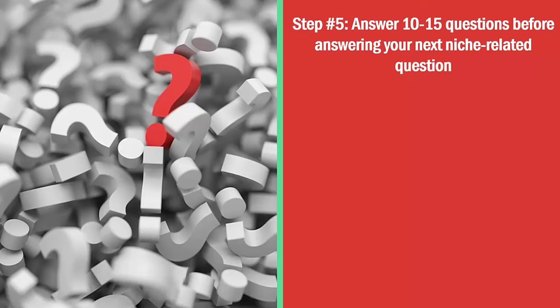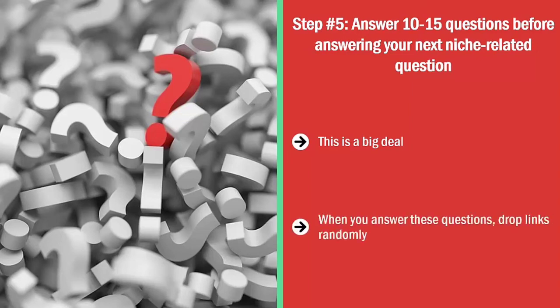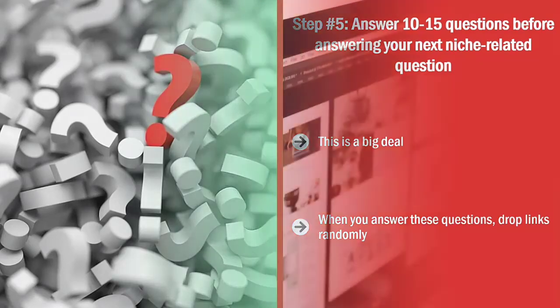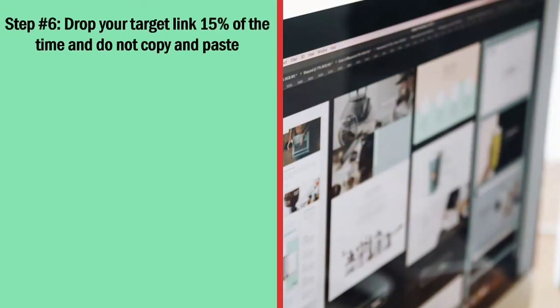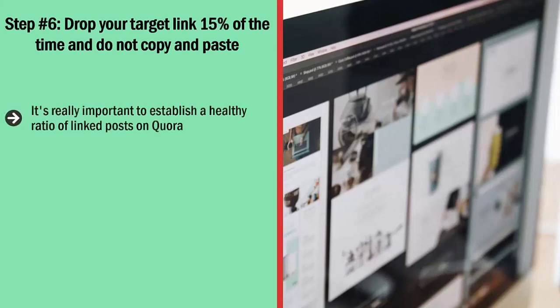Step number five: answer 10 to 15 questions before answering your next niche-related question. You can't only answer questions related to your niche — that's too obvious. Answer 10 to 15 unrelated questions across a wide range of unrelated niches. When you answer these, drop links randomly to curated content that answers their questions and is genuinely helpful — links unrelated to your niche. By doing this you build authority and begin to look like a legitimate, bonafide member of the Quora community.